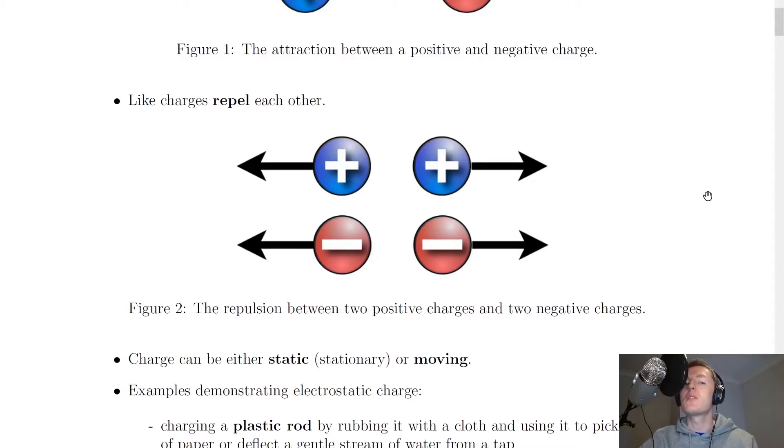And it's this attraction and repulsion of charge that helps us understand why electrons move in the direction that they do in a circuit.